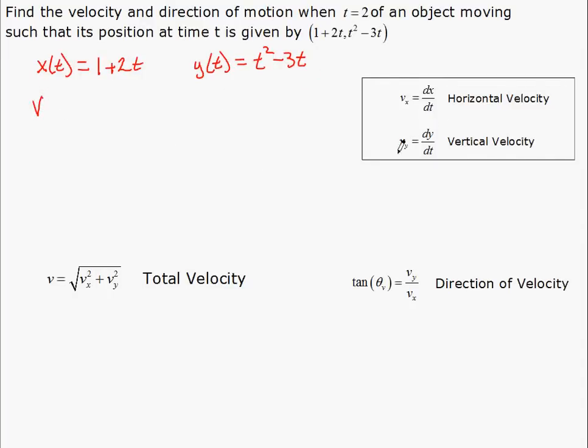So velocity is the derivative with respect to t of the position. So the x velocity then is going to be the derivative of this which is 2. The y velocity is going to be the derivative of the y position, so 2t minus 3.